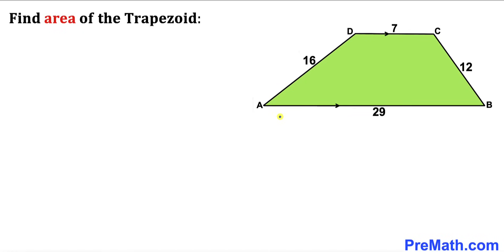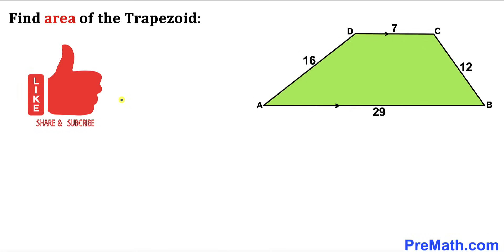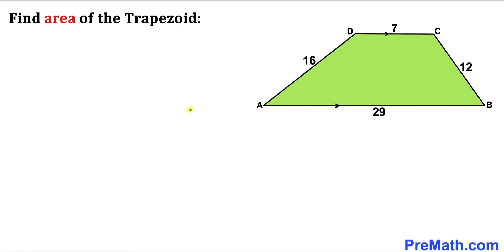Welcome to pre-math. In this video we have got trapezoid ABCD as you can see in this diagram, such that its side lengths are 29, 12, 7 and 16 units respectively. Our task is to calculate the area of this trapezoid. Please don't forget to give a thumbs up and subscribe. Please keep in mind that this figure may not be 100% true to the scale.